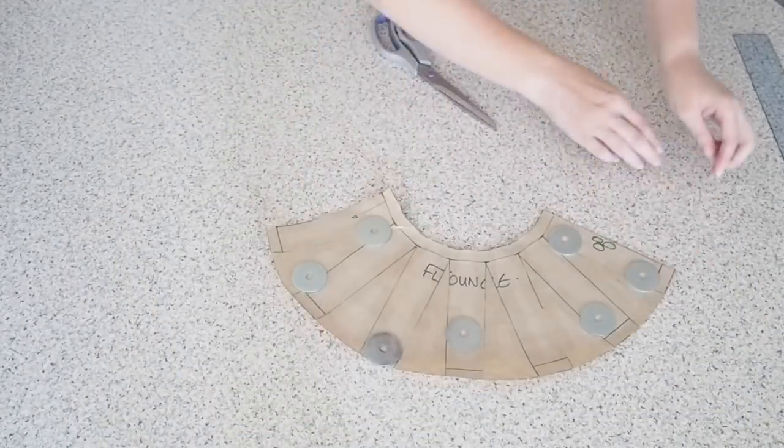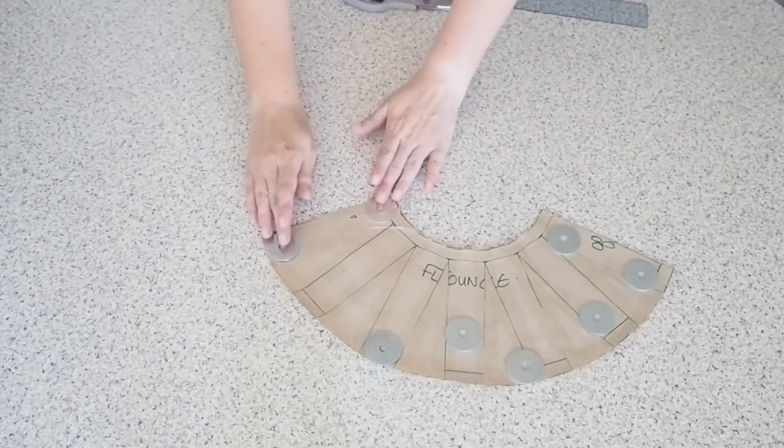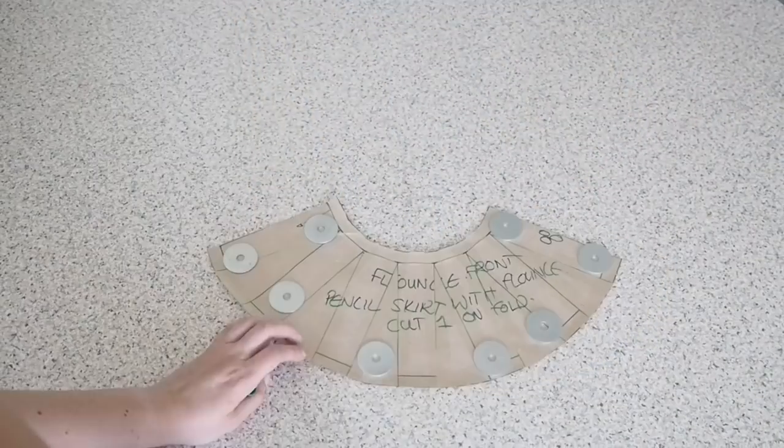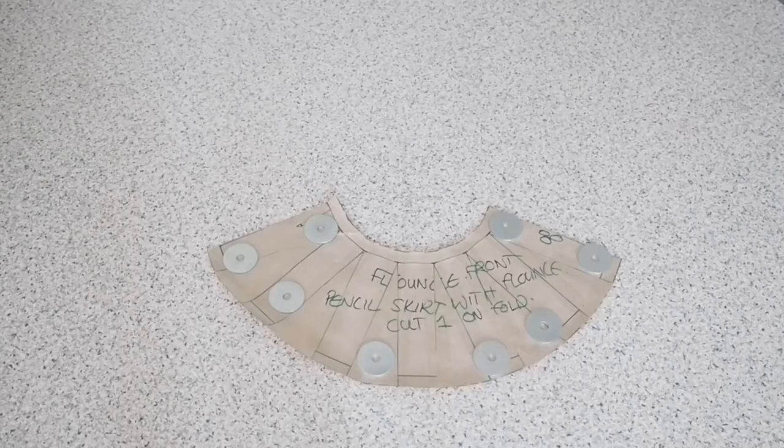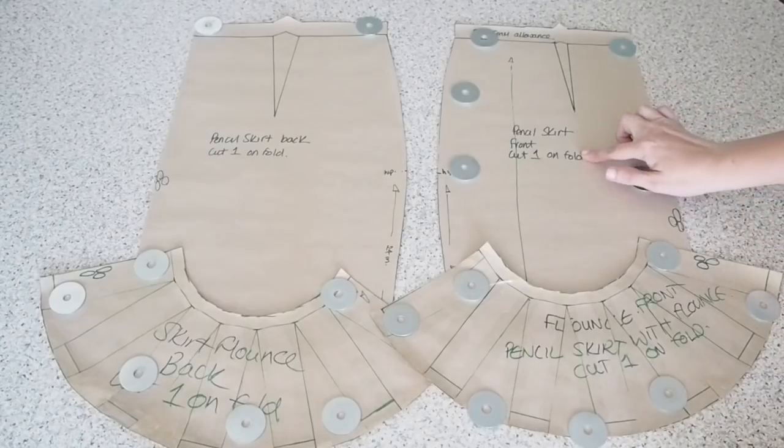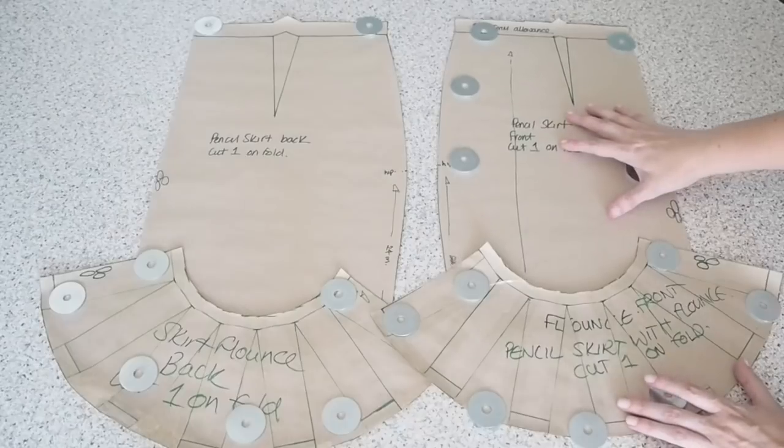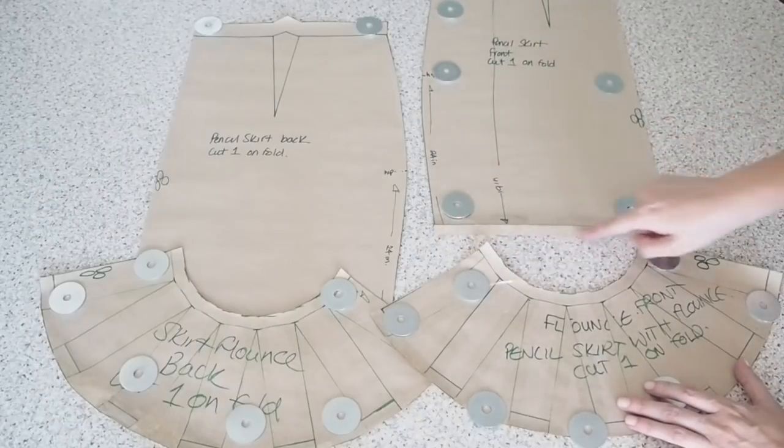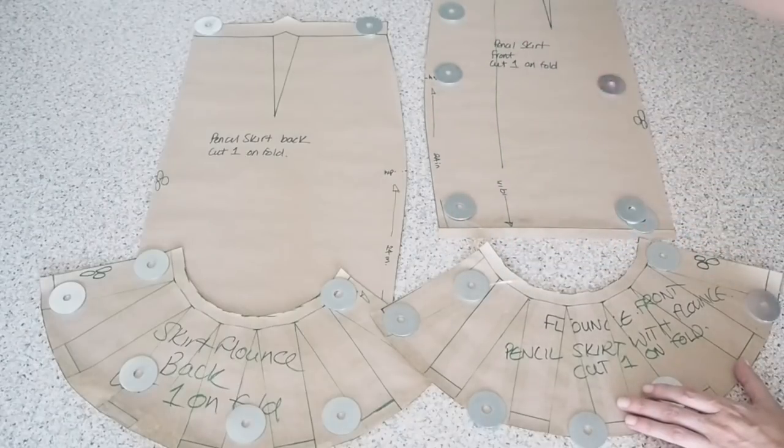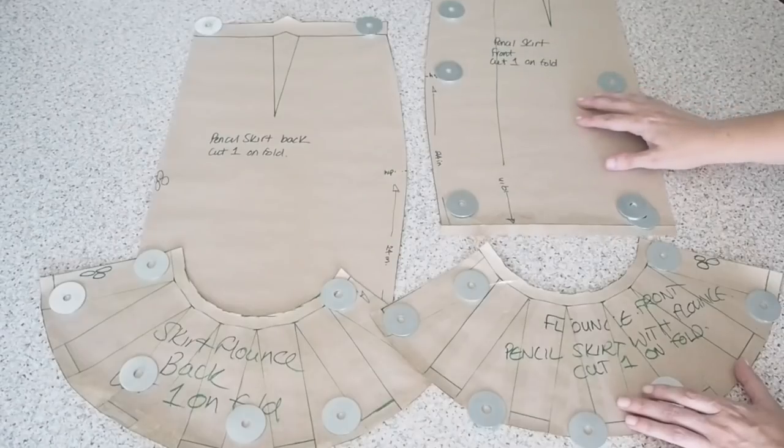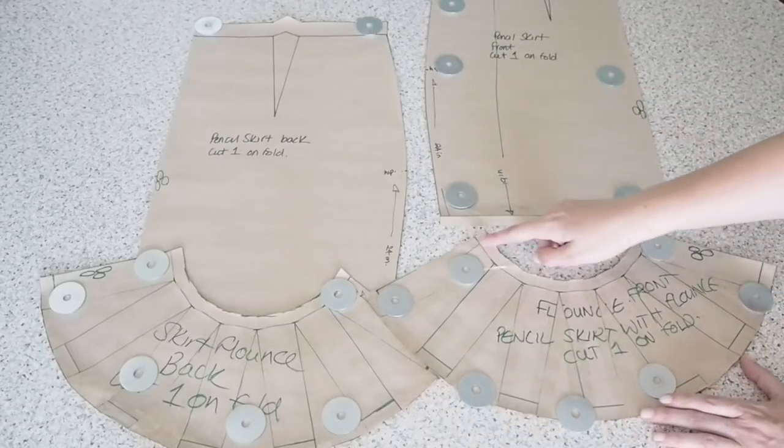You could trace this piece off on a fresh piece of paper so that everything is nice and flat, but I'm happy enough with mine to be like this. And I'm just showing here what the final pattern piece looks like for the entire skirt. So I've got my skirt front and back. I've got seam allowance the whole way around.